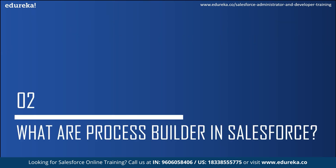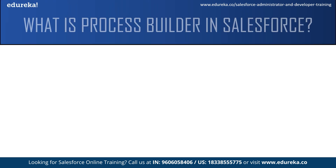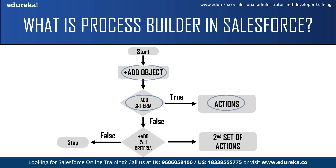Now let's move on to what exactly is process builder in Salesforce. Process builder is a point-and-click tool that lets you easily automate business processes and see a graphical representation of your process as you build them. Process builder consists of three main things: first is a trigger, second is a criteria node, and third is at least one automated action. A trigger identifies when the process should run. Criteria controls whether or not the process executes the associated actions — if the criteria is met, the automated actions are executed; if not, the actions are not executed. Like workflow, process builder has immediate actions and time-triggered actions.